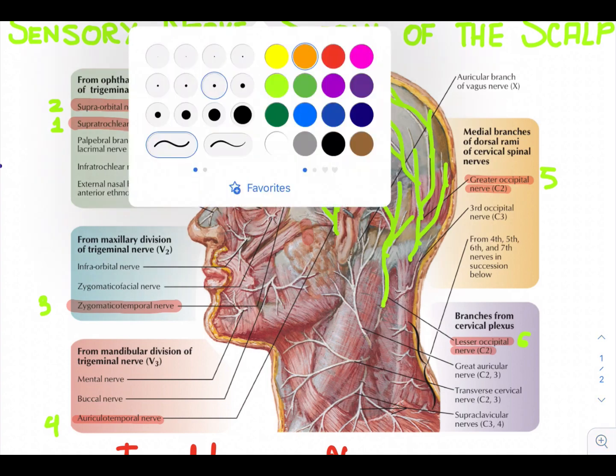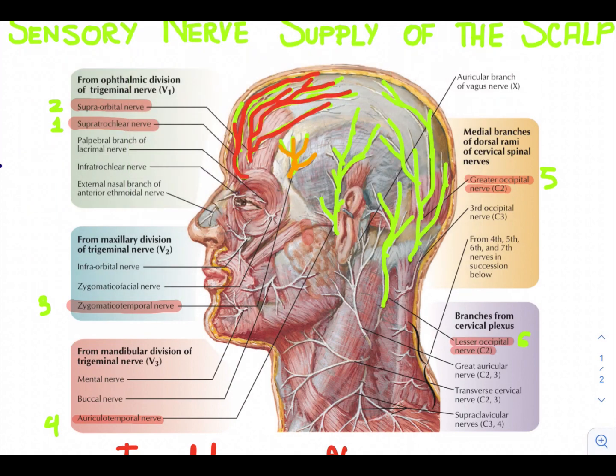The fourth one is the auriculo-temporal nerve. Let's trace it on the diagram. This is the auriculo-temporal nerve. It is a branch of the mandibular division of the trigeminal nerve. It ascends over the side of the head from in front of the auricle. Its terminal branches supply the skin over the temporal region.